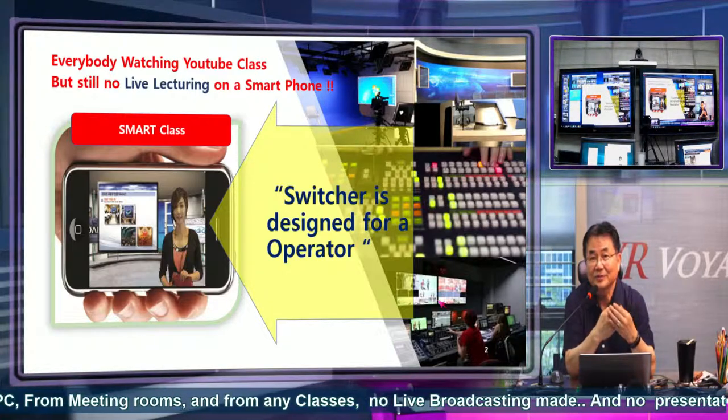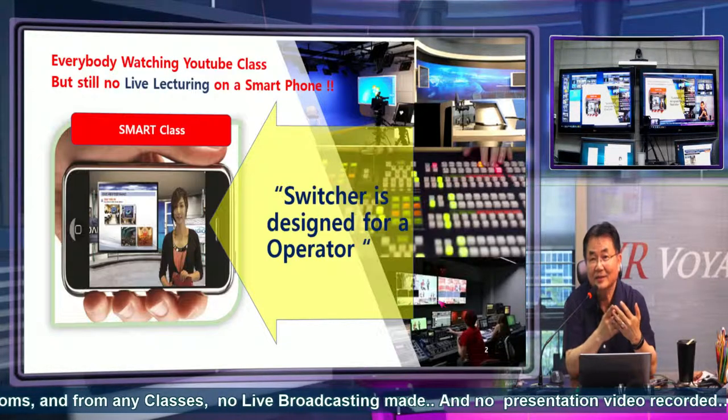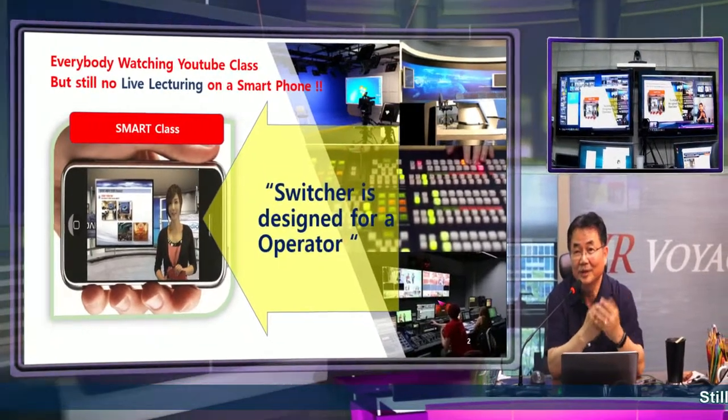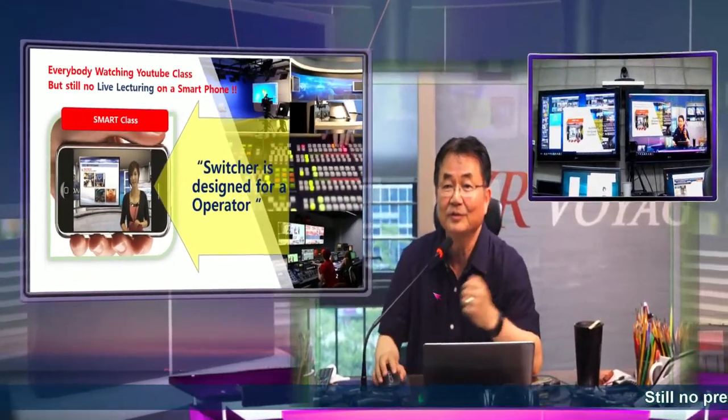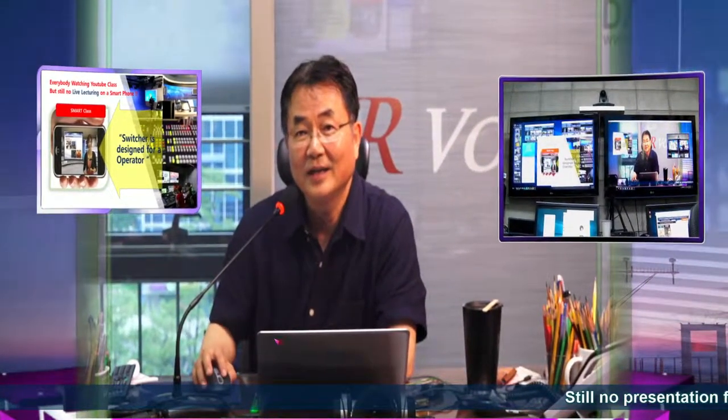That means every studio always needs an operator working together with the announcer. If you look at a self-studio like I am doing now, I cannot ask the operator to show what I really want to do. So now the new vision mixer I am providing — what I am doing right now is a studio like this. I just make one camera input, but I can add this together with other cameras. For example, I can show where I am doing the presentation here.